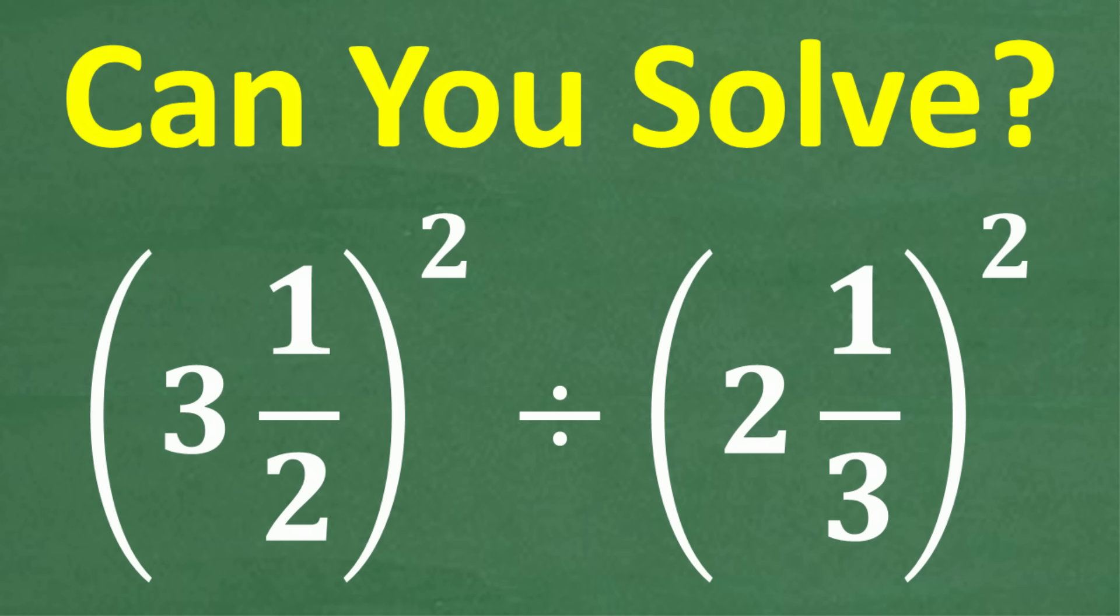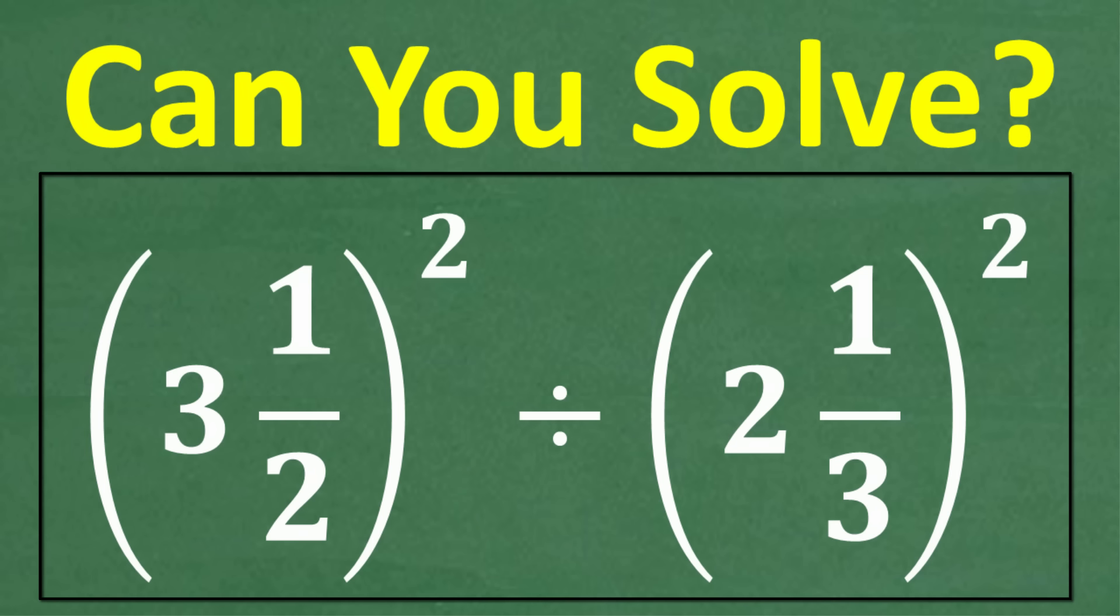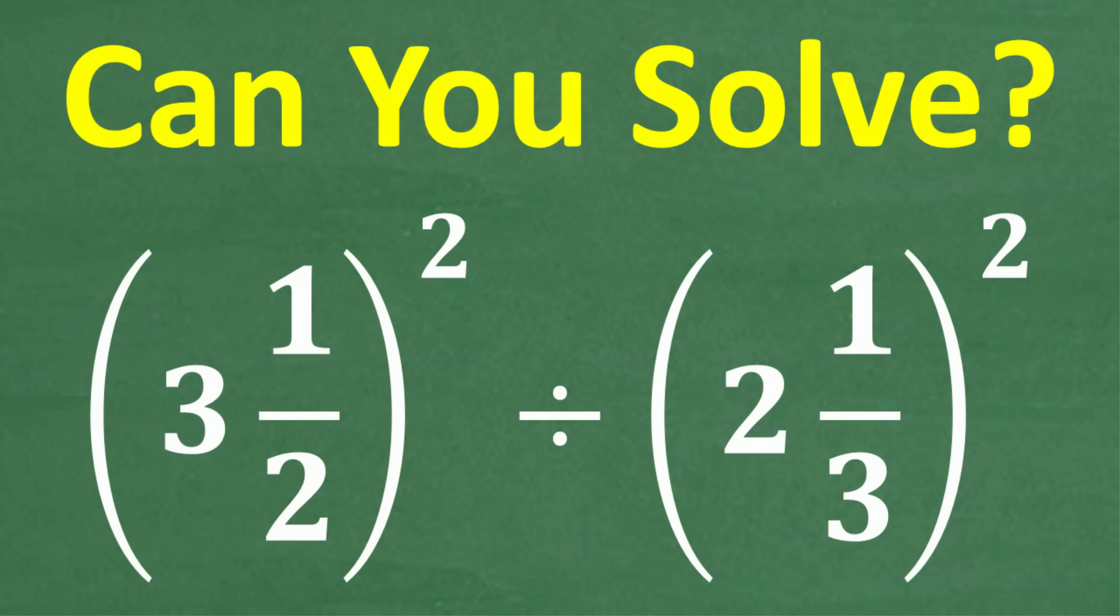But if you could do this problem—and of course we have 3 and 1/2 squared divided by 2 and 1/3 squared—without the aid of a calculator, put that thing away. And if you know how to do this or can figure this out, go ahead and put your answer in the comments section. I'm going to show you how to properly manage this problem step by step so you can get the correct solution.